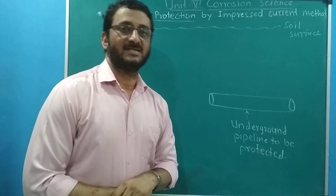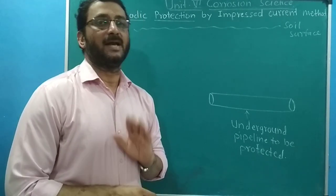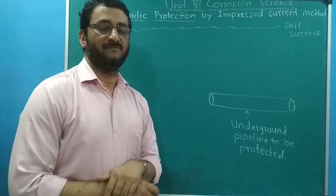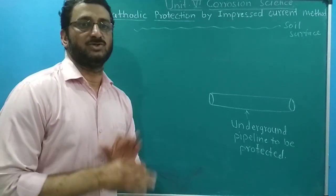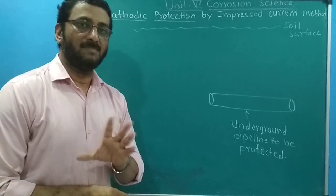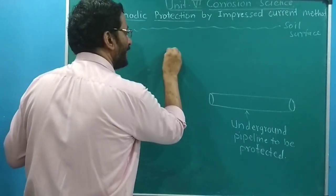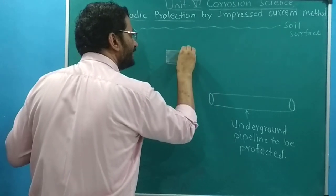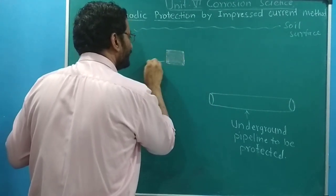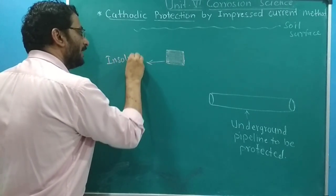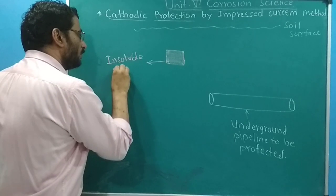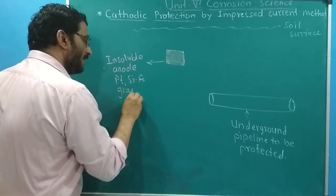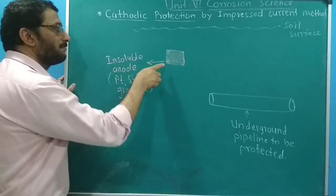Impressed current is mainly taken from a direct current source — from a battery or rectifier. For that purpose, one insoluble anode is chosen, like graphite, silica iron, or platinum. We take an insoluble anode nearby the structure. Sufficient direct current is applied to this insoluble anode from the battery or rectifier.